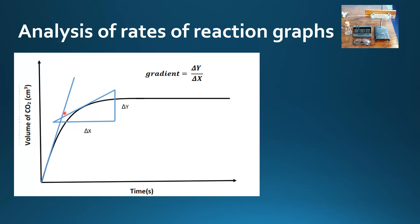As you can see from the shape of the curve that we've plotted, the rate of reaction is not constant. It's fastest at the start, and as the reaction proceeds the rate of reaction slows down.